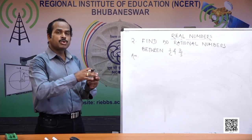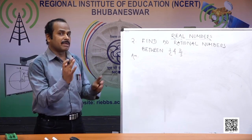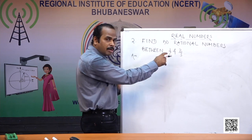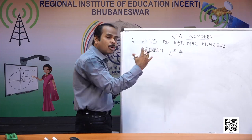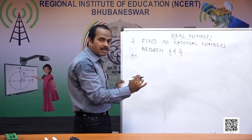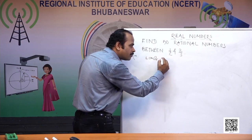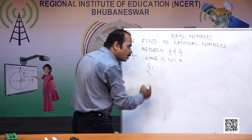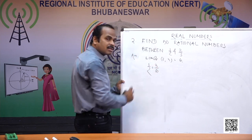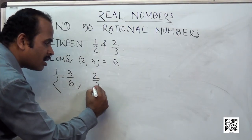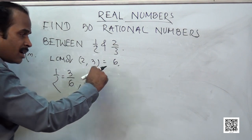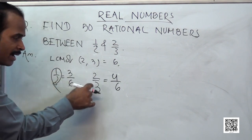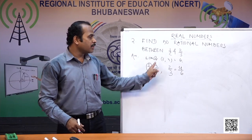We find the denominators of the two rational numbers: 2 and 3. We make them equivalent fractions by finding the LCM of 2 and 3, which is 6. So 1 by 2 equals 3 by 6 (multiplying numerator and denominator by 3), and 2 by 3 equals 4 by 6 (multiplying numerator and denominator by 2). Now both have denominator 6. The numerators are 3 and 4, and the difference is 4 minus 3 equals 1. But we require 50 rational numbers between them.